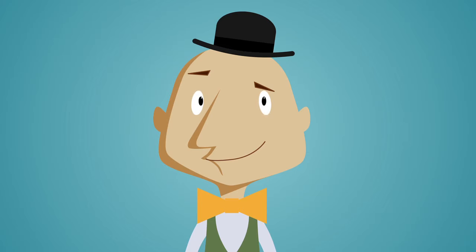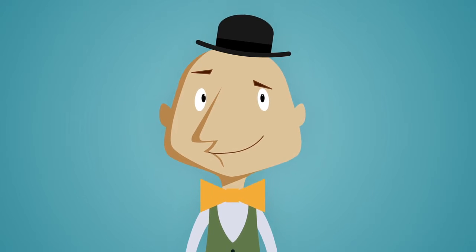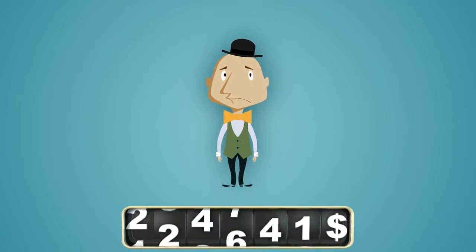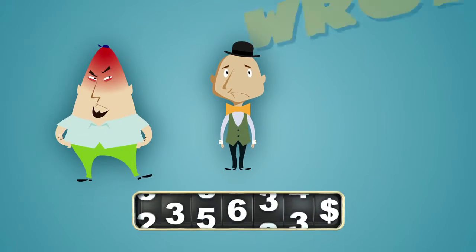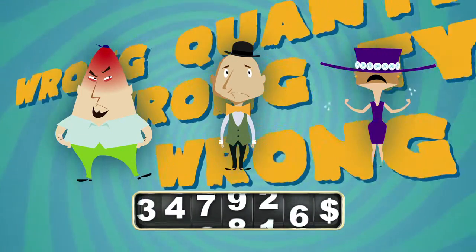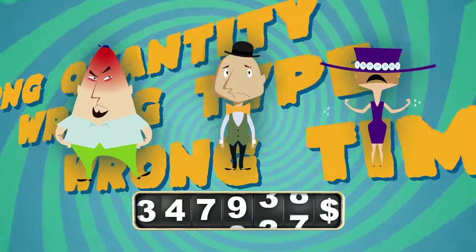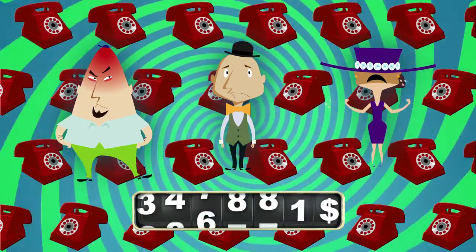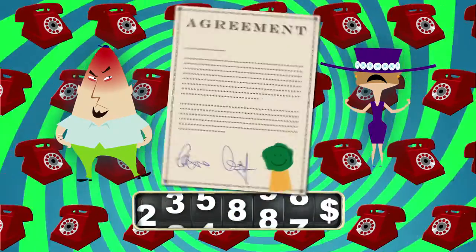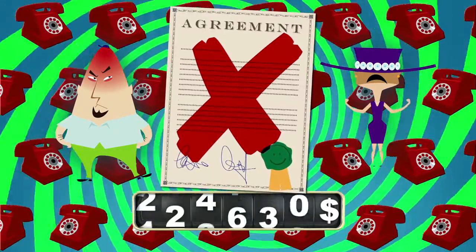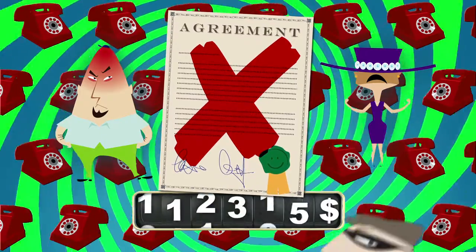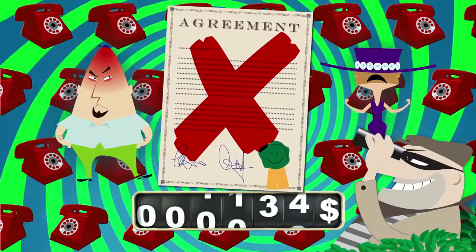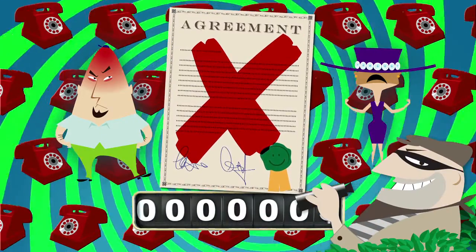One day, without any warning or any process changes, more and more of Bob's customers start to get the wrong quantity and quality of hats. Customers start to call Bob, demanding that he take back the wrong hats. Some customers threaten to cancel their agreement with him, and Bob's competitors take the opportunity and start to lure his customers away.